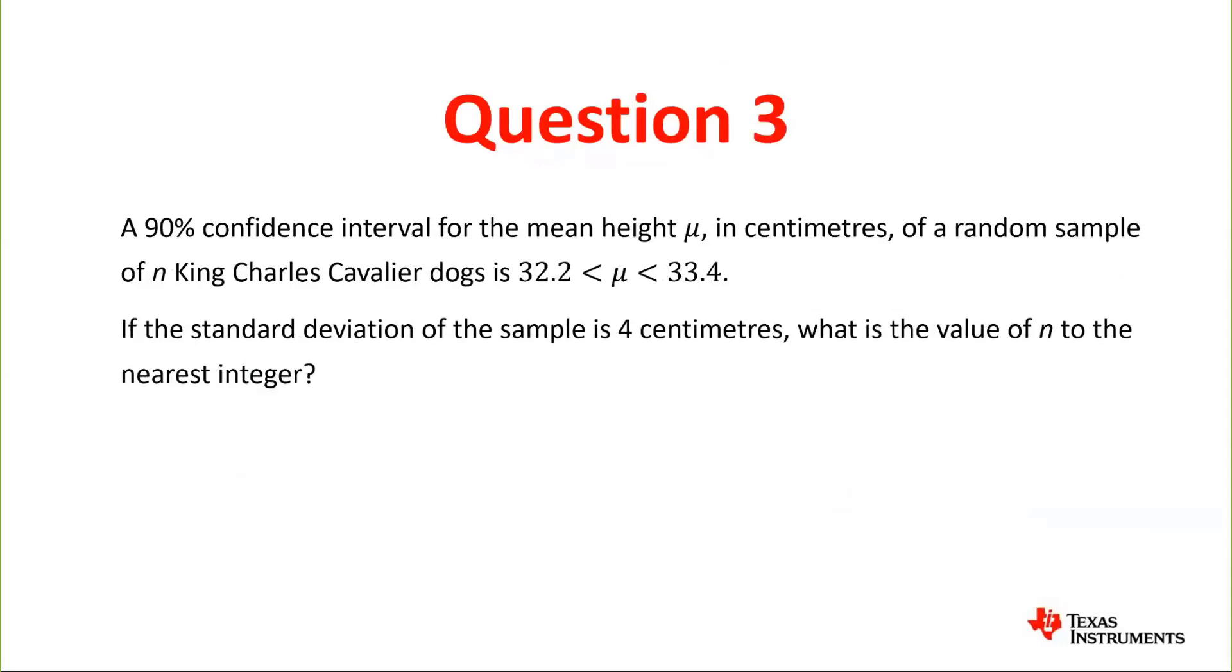Question 3: A 90% confidence interval for the mean height μ in centimeters of a random sample of n King Charles Cavalier dogs is 32.2 to 33.4 centimeters. If the standard deviation of the sample is 4 centimeters, what is the value of n to the nearest integer that makes this interval occur?